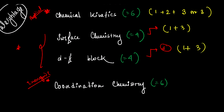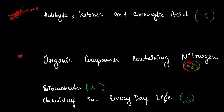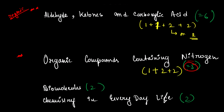When high importance is given to a chapter, all kinds of questions appear. From Surface Chemistry: one-mark and three-mark questions. From D&F Block: one-mark and three-mark questions. From Coordination Chemistry: one-mark, two-mark, and three-mark questions. From Aldehyde, Ketone and Carboxylic Acid: one-mark, two-mark questions with an 'or' also from the same chapter. From Nitrogen Compounds: one-mark, two-mark questions. Biomolecules: two marks. Chemistry in Everyday Life: two marks.